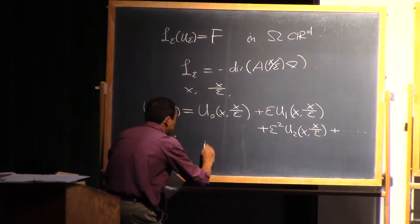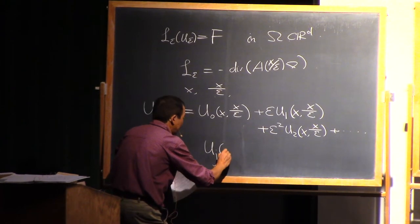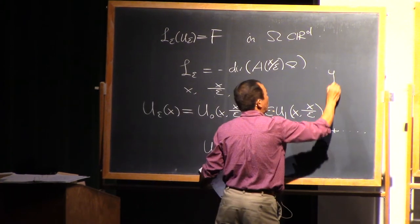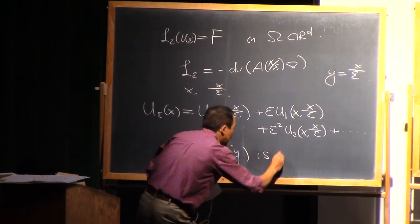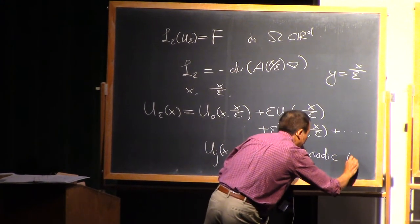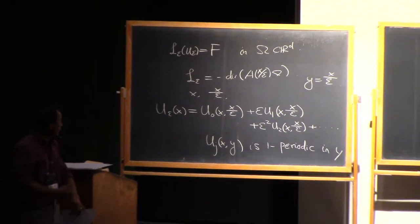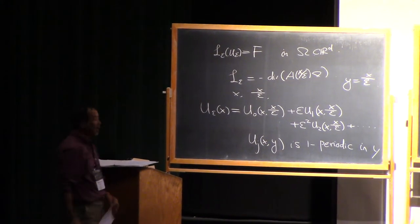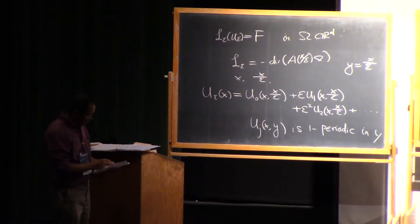We can assume that each of these functions U_j of x, y - whenever you see y, you should think of x over y - is one periodic in the second variable. Because that's what you have in an equation of x over y, whenever the coefficient is periodic in that variable there.